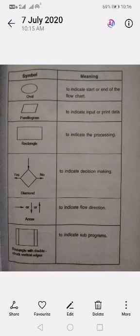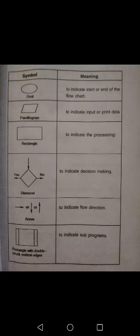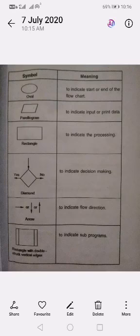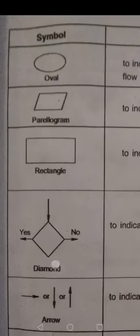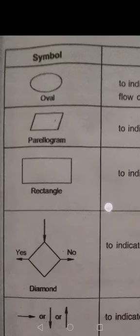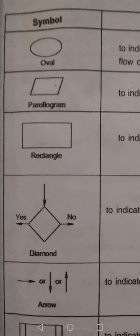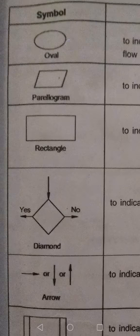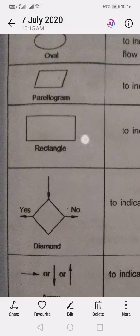The first symbol is... this picture shows the various symbols which are used for drawing the flowchart. We have lot of symbols such as oval, parallelogram, rectangle,